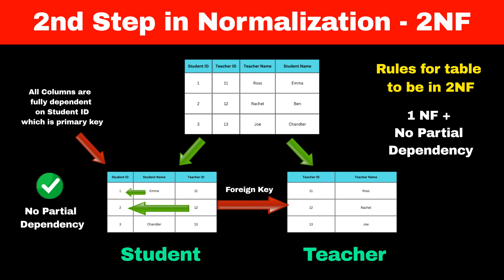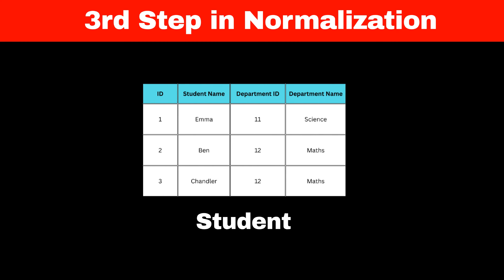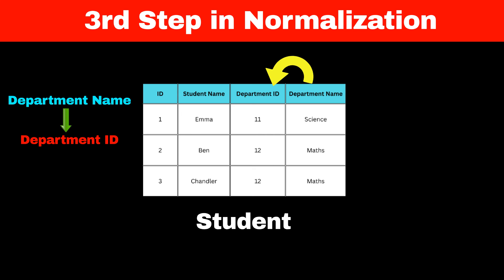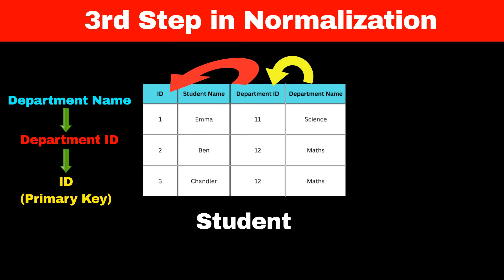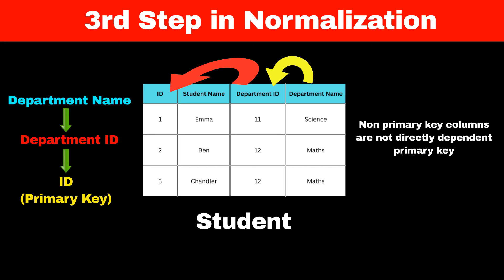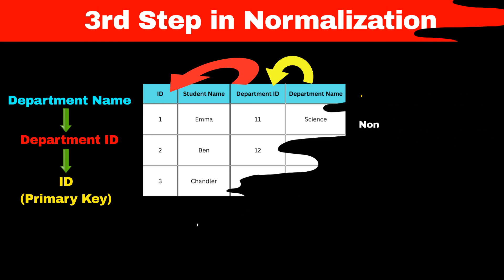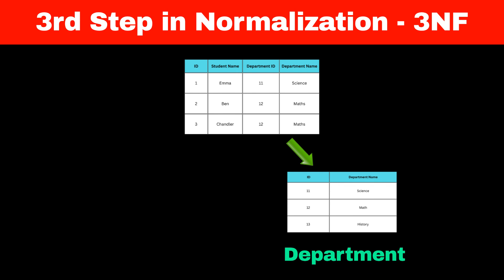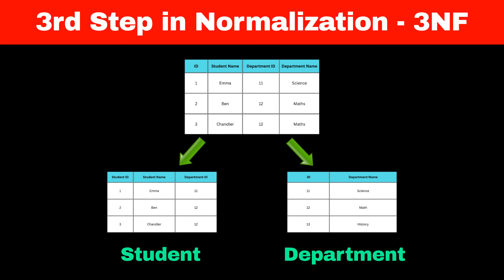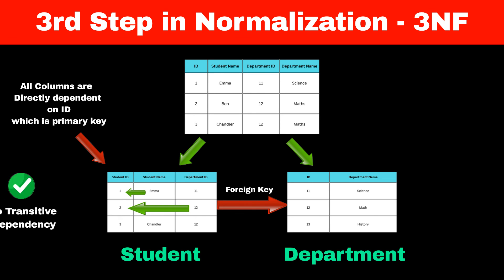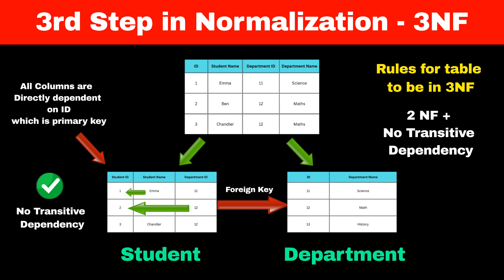Now let's understand the third normal form. Consider a student table with four columns: ID (the primary key), student name, department ID, and department name. Department name is dependent on department ID, and department ID is dependent on ID which is the primary key. This scenario, where non-primary key columns are not directly dependent on the primary key, is called transitive dependency. The third step in normalization is to remove this. We create a separate department table with ID and department name, and a student table with ID, name, and department ID as a foreign key. Now all columns in the student table are directly dependent on the primary key, so transitive dependency has been removed, reducing data redundancy and ensuring data consistency.